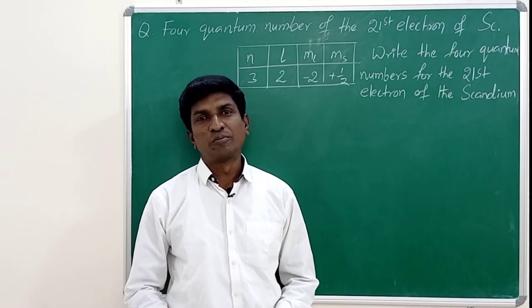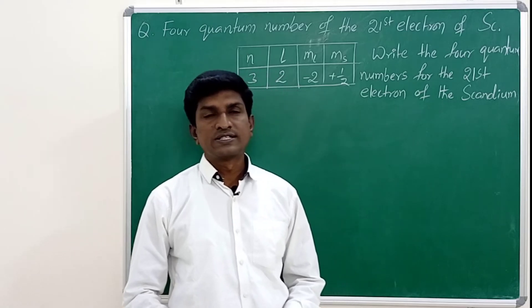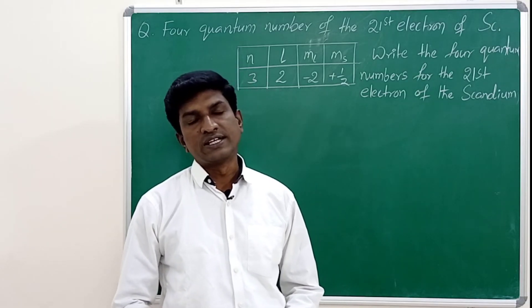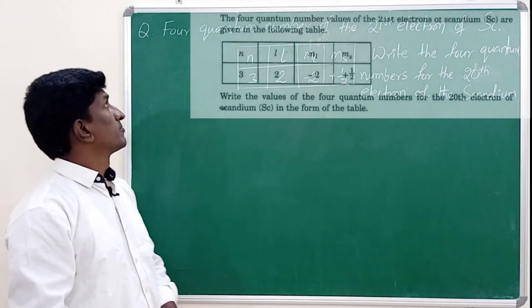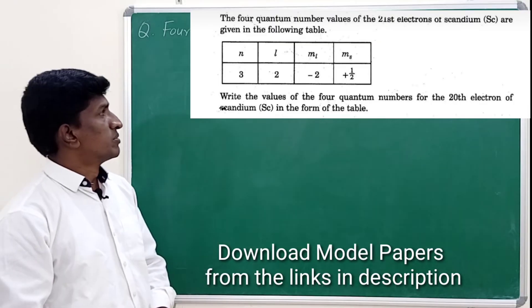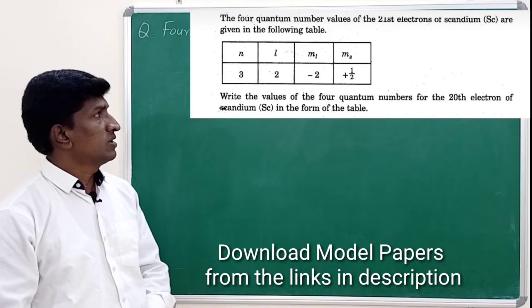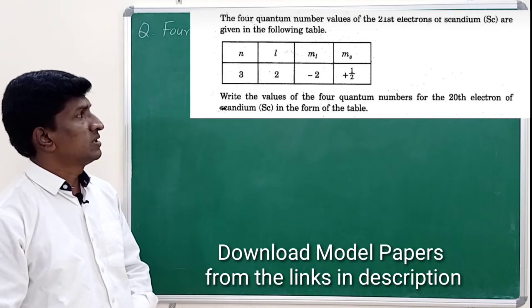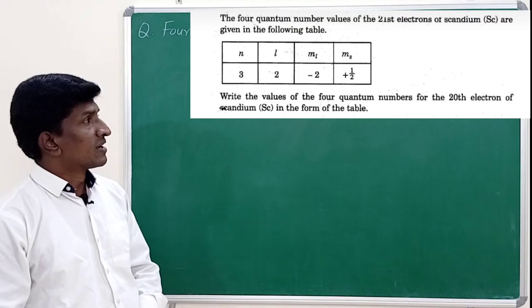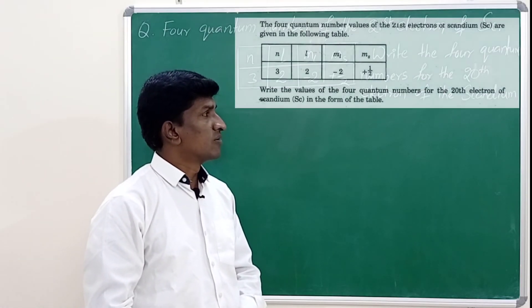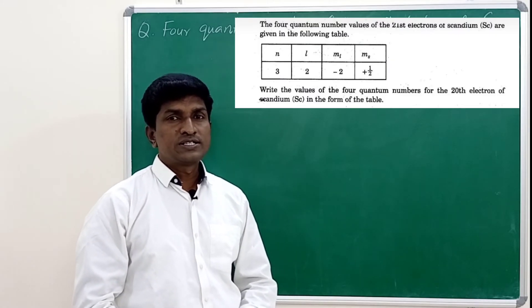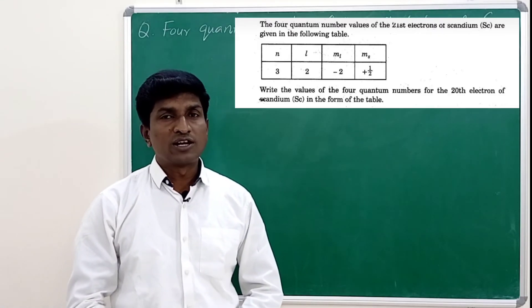Hello students, welcome to Physics Learning Point. In this class, let us discuss an important question which was asked in the March 2017 TSSC examination. The question is: four quantum numbers of the 21st electron of scandium are given in a table — principal quantum number 3, angular momentum quantum number 2, magnetic quantum number minus 2, spin quantum number plus half. Write the four quantum numbers for the 20th electron of scandium in tabular form.